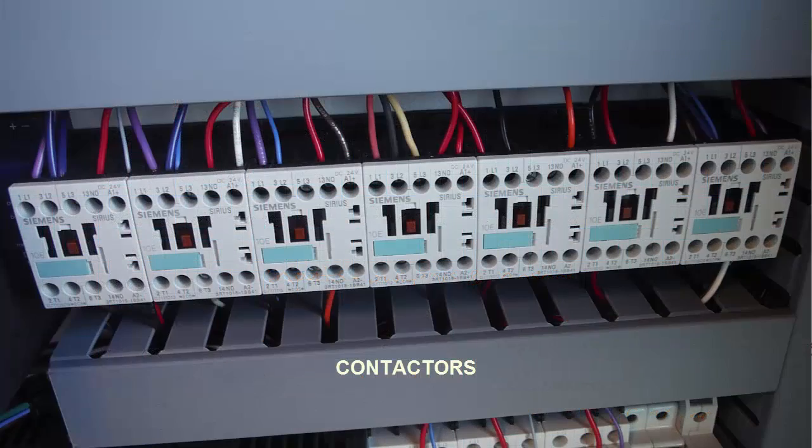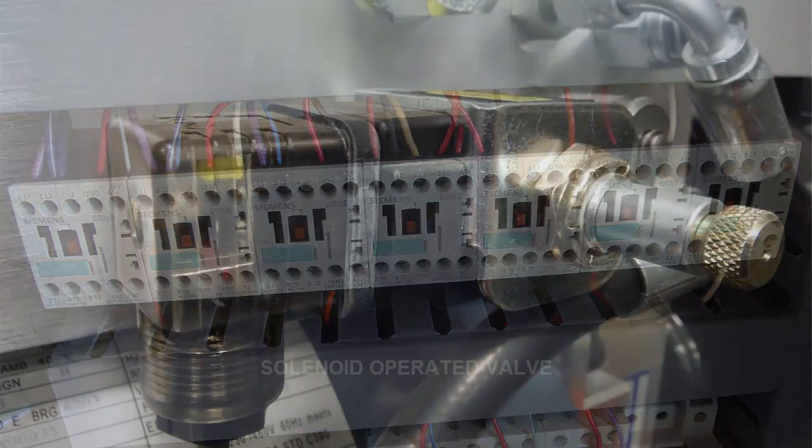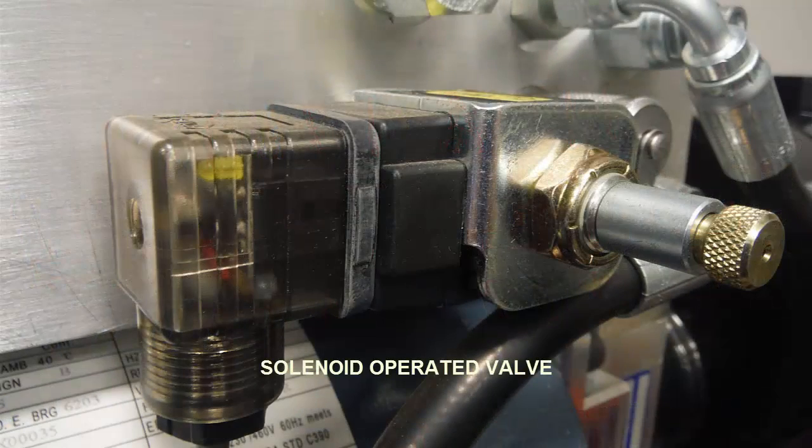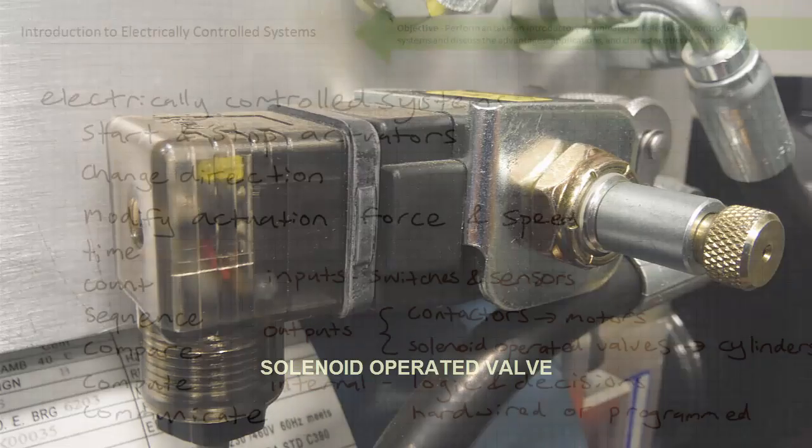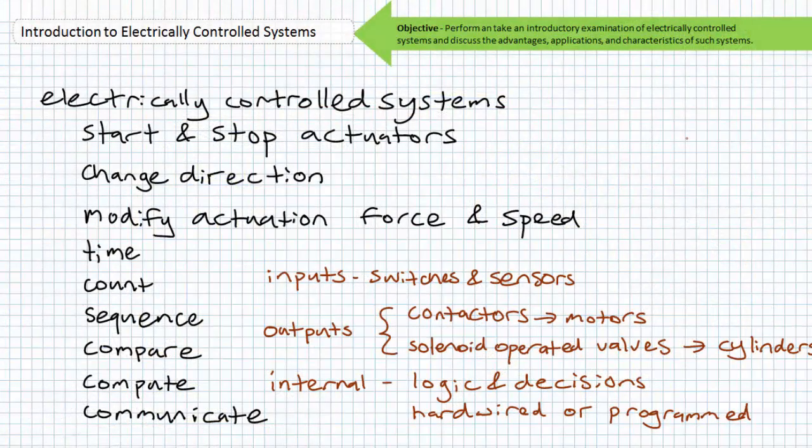A contactor starts or stops a motor. The solenoid operated valve extends or retracts a hydraulic cylinder. If the motor is disconnected from the contactor, or the system doesn't close the contactor, the motor won't start. If the cylinder doesn't have fluid supply, or the solenoid operated valve doesn't shift, the cylinder won't extend or retract.